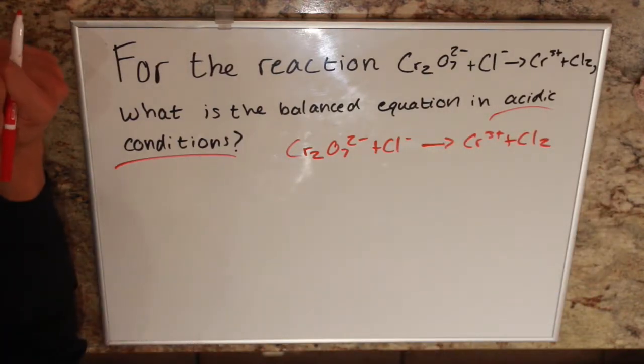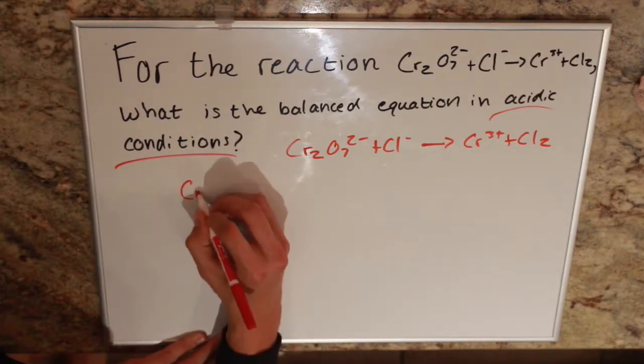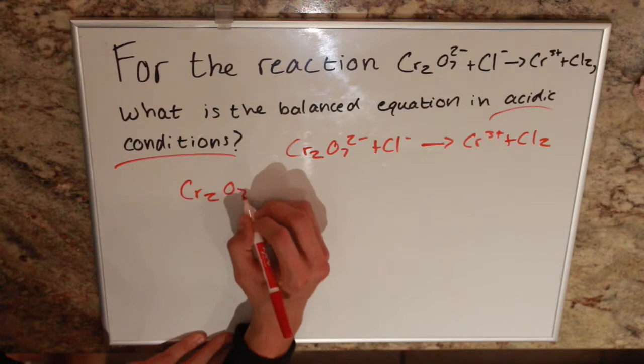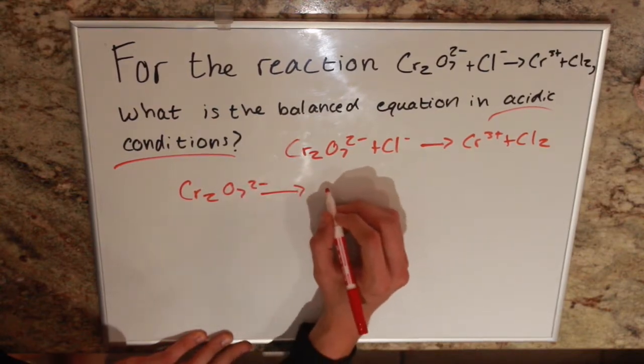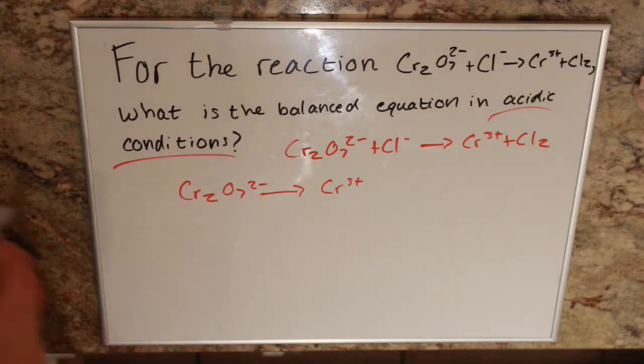So we isolate our half reactions and balance those guys out. So we have Cr2O7 2- yielding Cr3+. Solve this guy first.